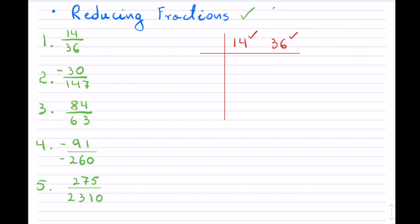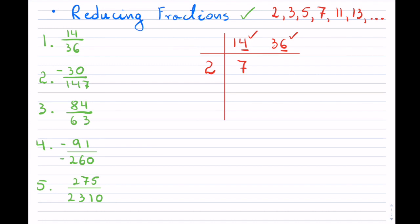Recall the primes: 2, 3, 5, 7, 11, 13, and it continues on. These are the only ones you have to check — again, if you want to know more you can watch the video on primes that I have recorded. Now first off, I notice that both numbers end in an even digit — a 4 and a 6 — which means that both of them will be divisible by 2.